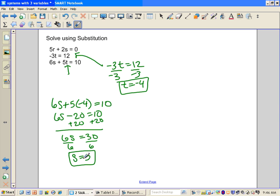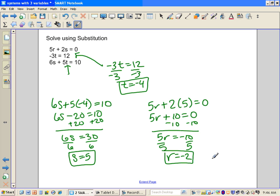And so then clearly I can plug the s into this one up here. 5r plus 2 times 5 is equal to 0. 5r plus 10 is equal to 0. Subtract 10. 5r is equal to negative 10. Divide by 5. r is equal to negative 2.